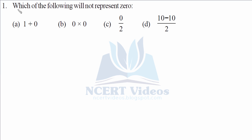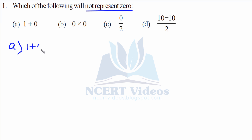Question one: which of the following will not represent zero? We are given four options and have to find which does not represent zero. First is one plus zero, that is one, so it does not represent zero.